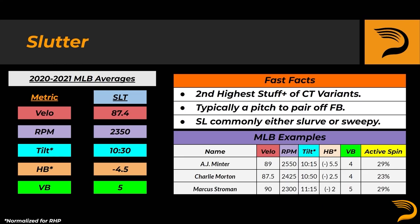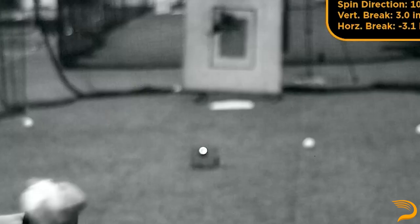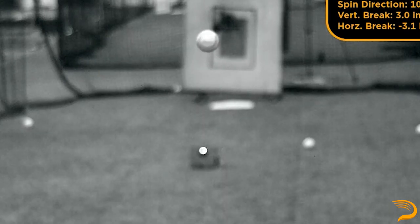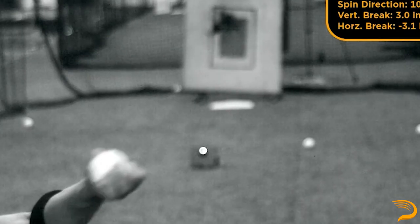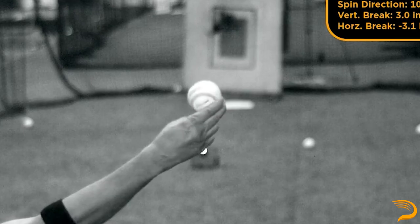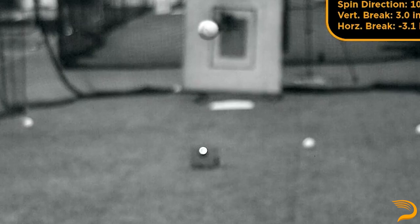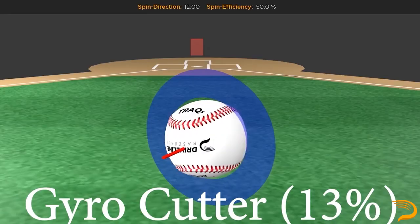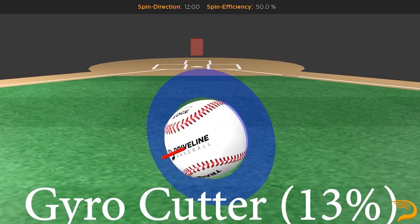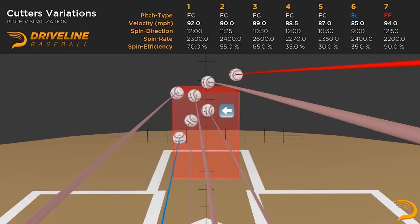On average, this pitch was thrown right in between slider and cutter velocity at about 87.5 miles per hour. The slutter also had the second highest stuff plus score amongst cutter profiles. Pitchers will often use this as essentially a slider to pair off their fastball, which is likely the case with AJ Minter. Alternatively, it can be used as a pitch to pair with a bigger slurve or sweeper, which is the case with Charlie Morton and Marcus Stroman. The gyro cutter is the first pitch that plays more like a traditional cutter given the vertical break on the offering. 13% of classified cutters saw their movement profile look like this over the past two seasons.